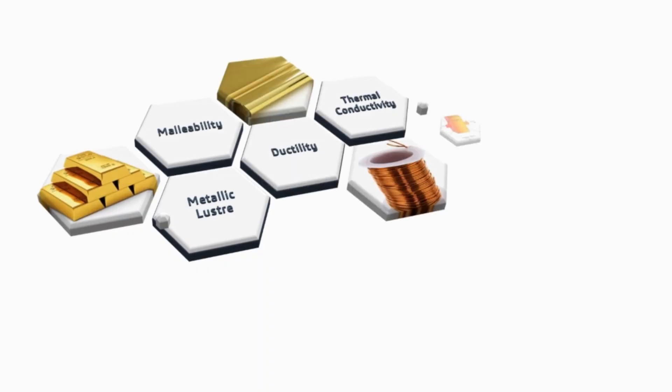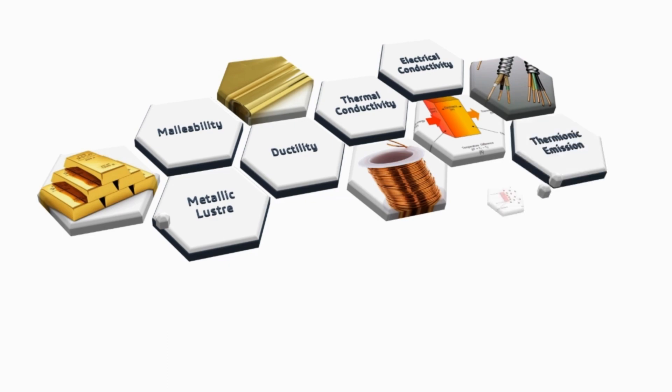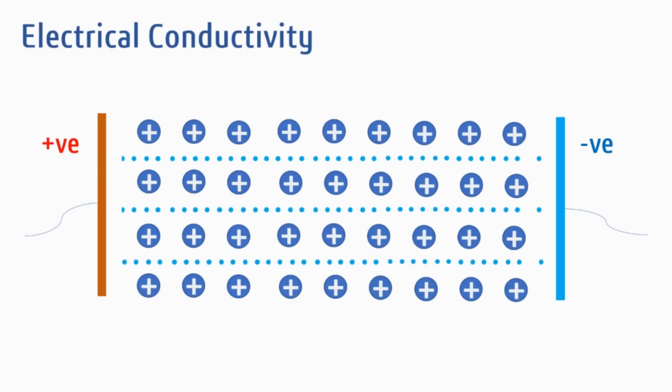In the light of this theory we can explain the set properties of metals. Electrical conductivity: Under applied external field the free electrons move towards positive field and thus a directed flow of electrons is responsible for the electrical conductivity of metals.